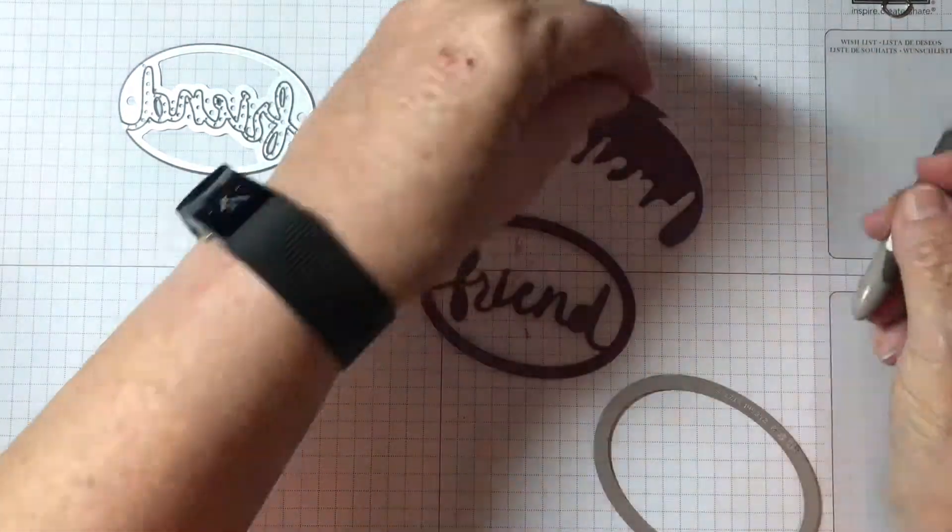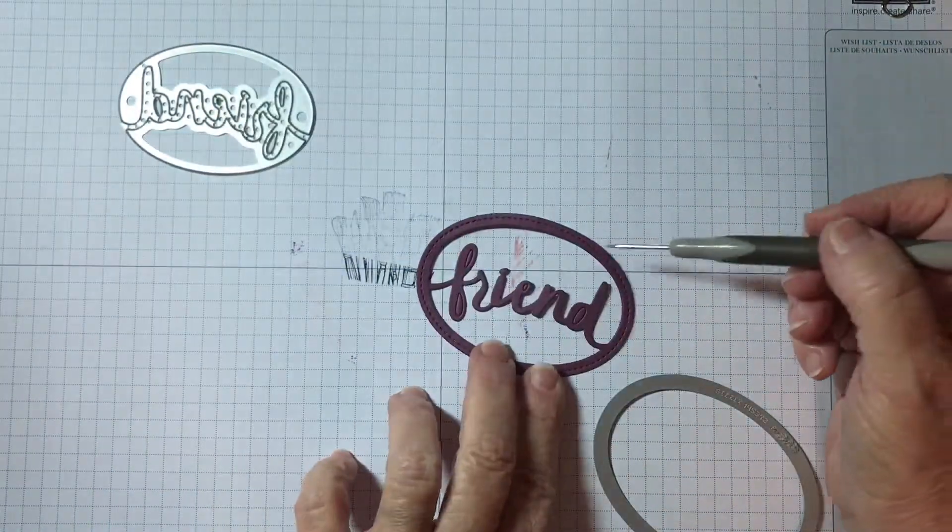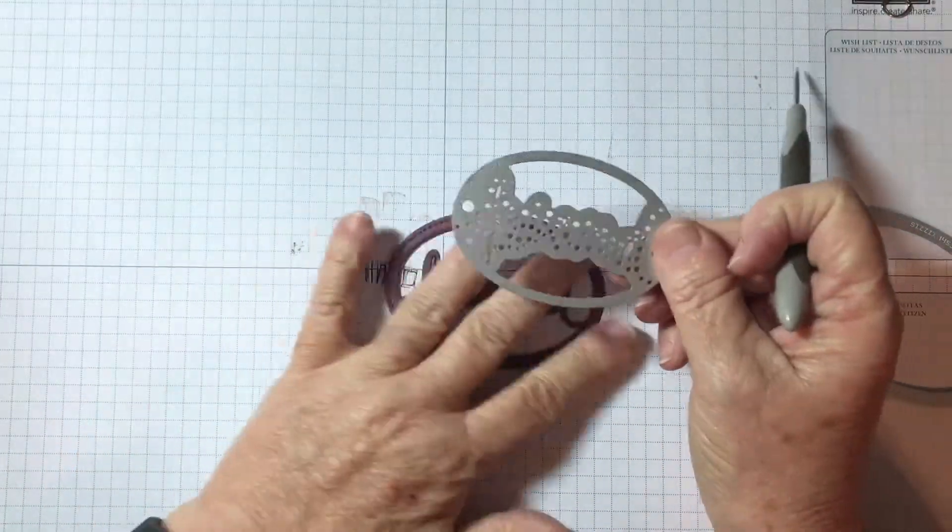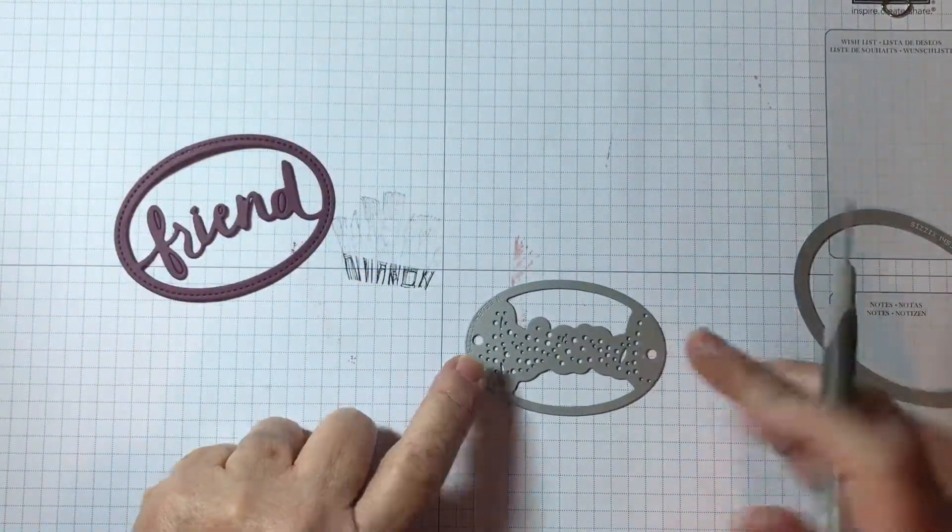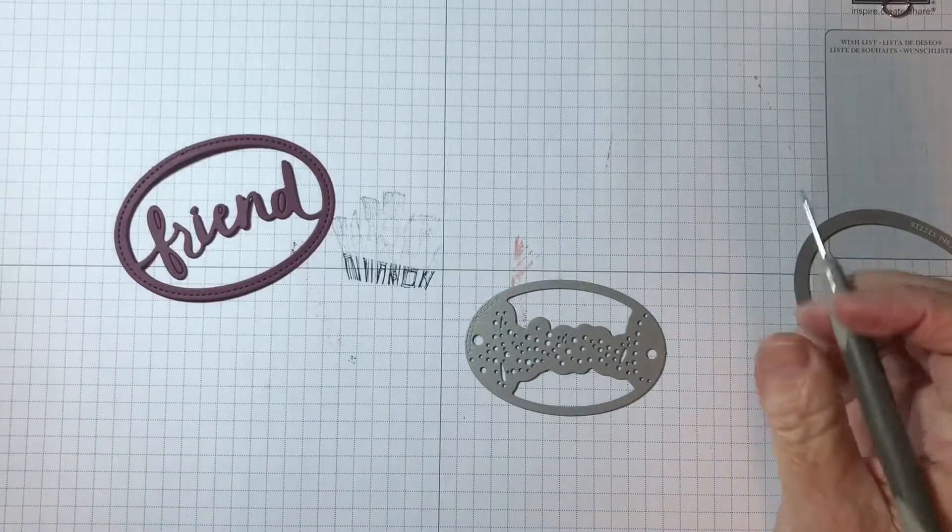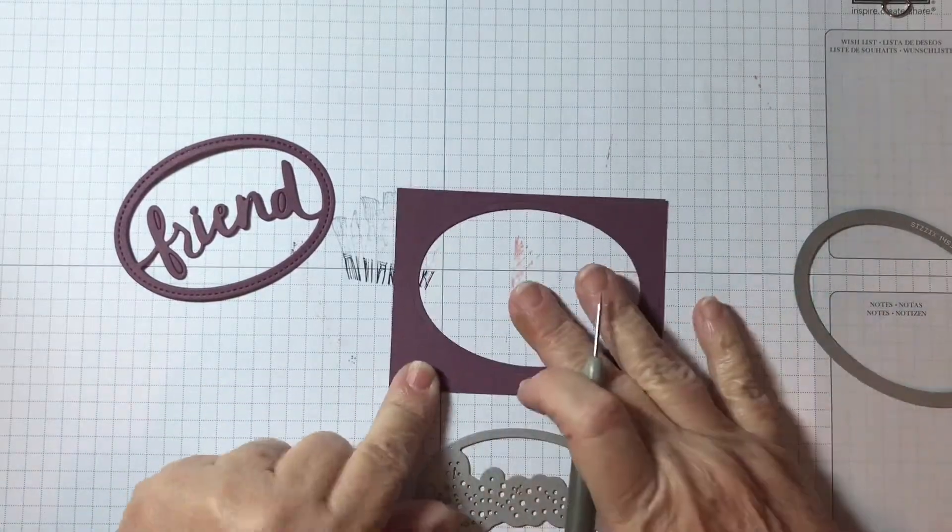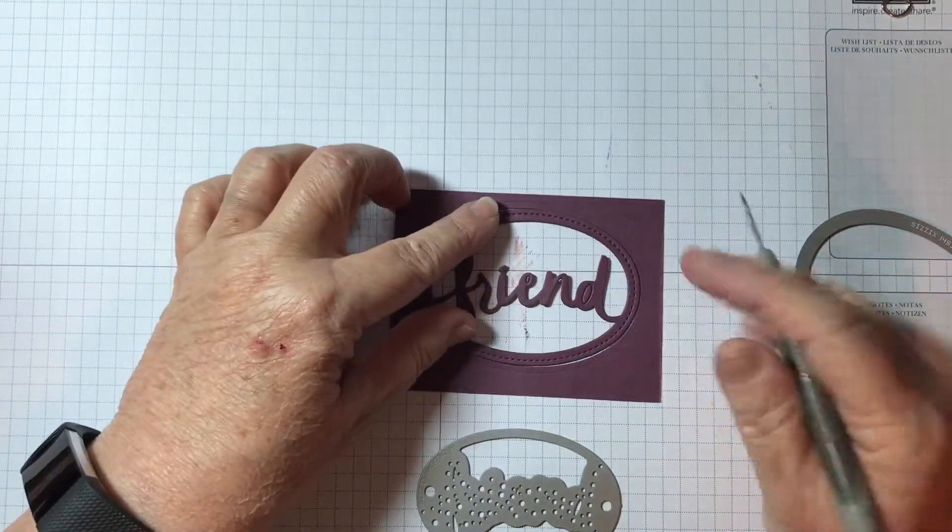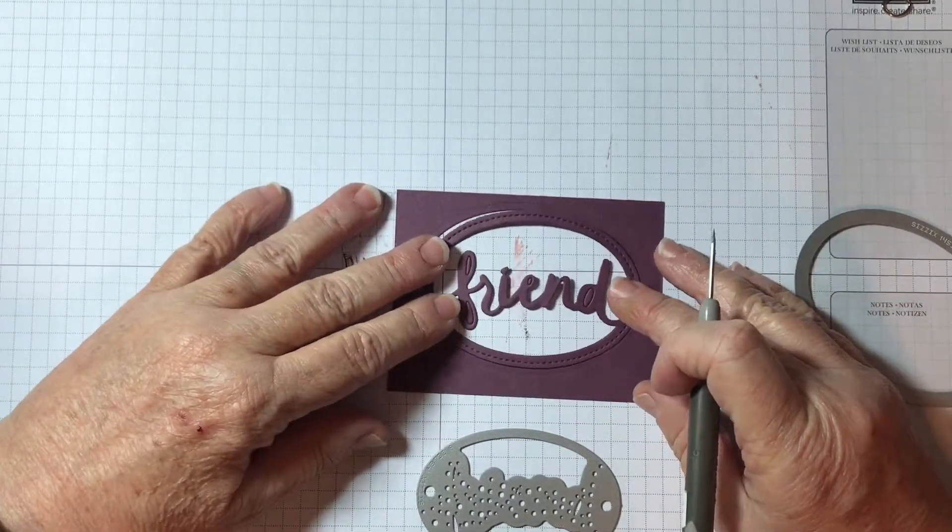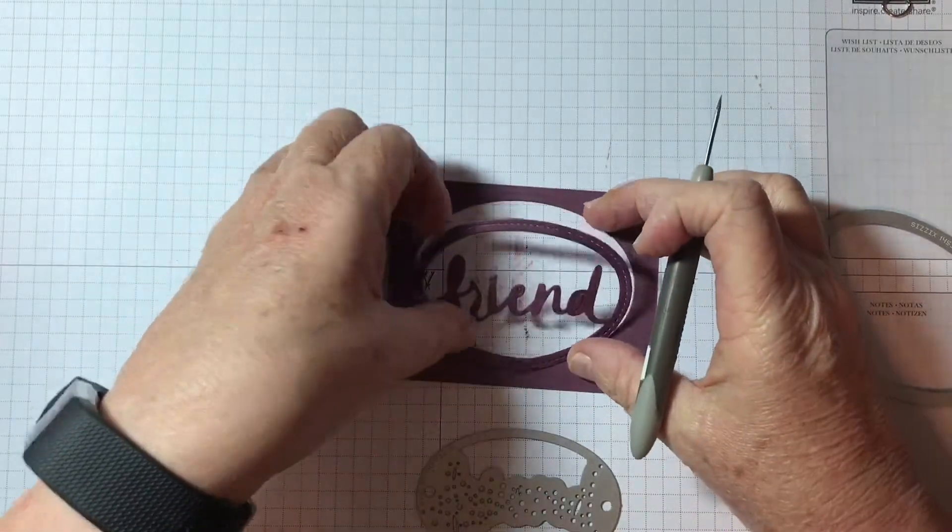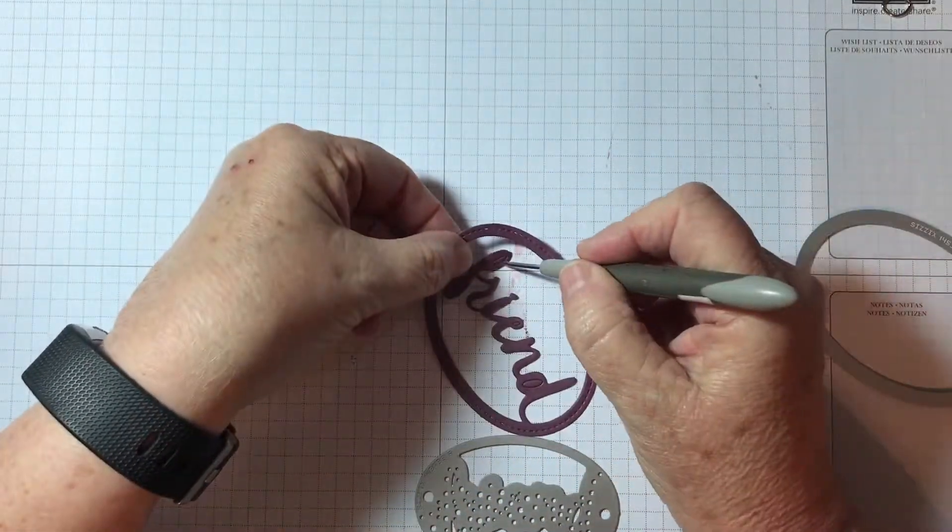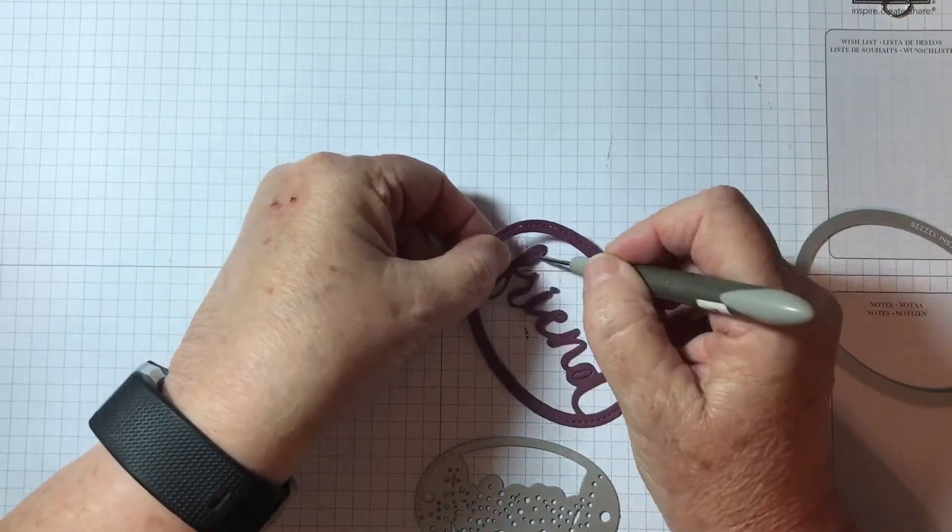And there is our friend. If you notice, we have another shape out here. If you were to just use this right here, it would not cut out. You would have the friend, it would look like this. Without the stitching, it would stay into the piece of cardstock, but I wanted this to be separate and apart. So that's why I've done it that way.